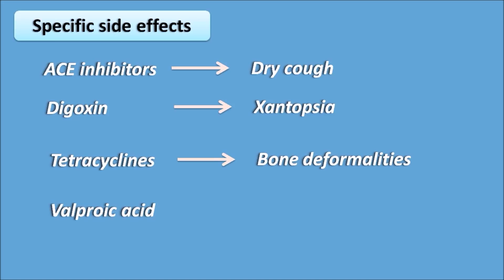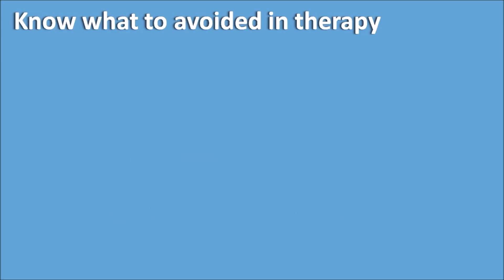Valproic acid is a drug that produces neural tube defects like spina bifida — it is a teratogenic agent causing serious problems. All these are clinically very important side effects, and there is a high chance that exam questions will appear on any of these drugs. List out the specific side effects that are clinically significant.